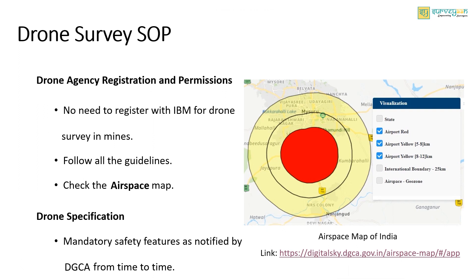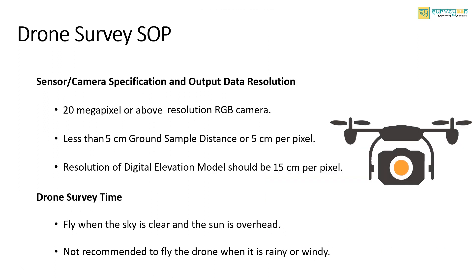Drones used for the survey should comply with DGCA guidelines and possess mandatory safety features as notified by DGCA from time to time. The drone should have a minimum 20-megapixel or higher resolution RGB camera with the capability to capture high-quality undistorted pictures. The camera should have the resolution to capture images with less than 5-centimeter ground sample distance, or 5 centimeters per pixel. The resolution of the digital elevation model should be 15 centimeters per pixel. It is advised to fly the drone in better conditions when the sky is clear and the sun is overhead to minimize shadows in photographs.